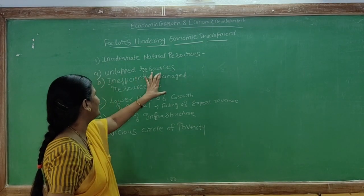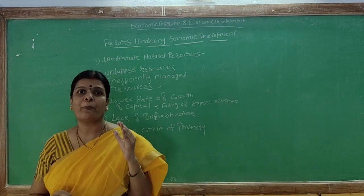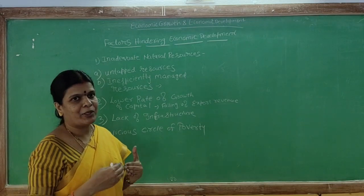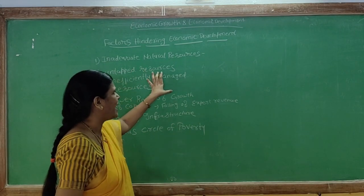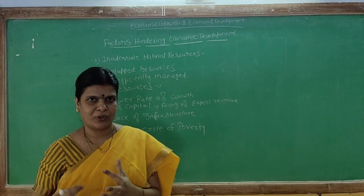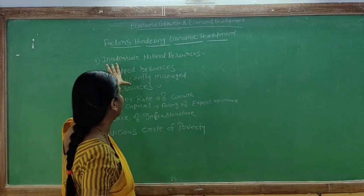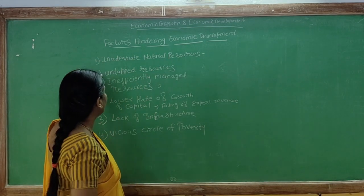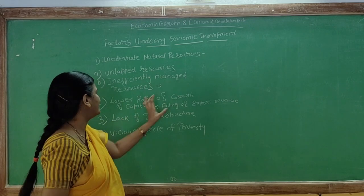Inefficiently managed resources means there is no proper planning in managing resources — because of closed economic policy, they have no proper planning and don't know how to make best use of resources. That is called inefficiently managed resources. So the first hindrance is lack of or inadequate natural resources, divided into: untapped resources and inefficiently managed resources.